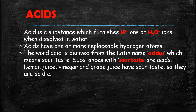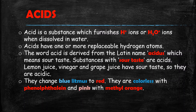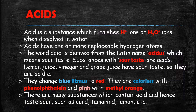Acids are the same as lemon juice, vinegar, and grape juice — these are sour-tasting substances, these are acidic. Acids turn blue litmus red. They are colorless with phenolphthalein, and they turn pink with methyl orange. We use all these indicators to identify whether a substance is acid or base. Examples include curd, tamarind, and lemon — these substances contain acids.